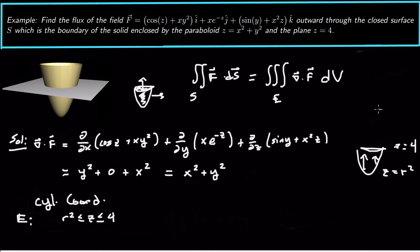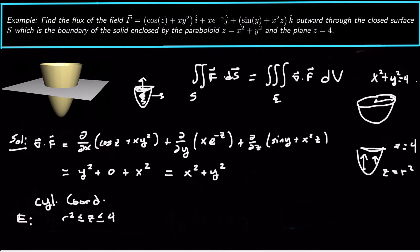r is going to go from — we need to figure out where the paraboloid intersects the plane z = 4. If z = 4, that's x² + y² = 4, so on that circle r has its maximum value of 2. So r goes from 0 to 2, because we go all the way out to that circle of radius 2 at the top. And then θ goes from 0 to 2π because it goes all the way around the z-axis.